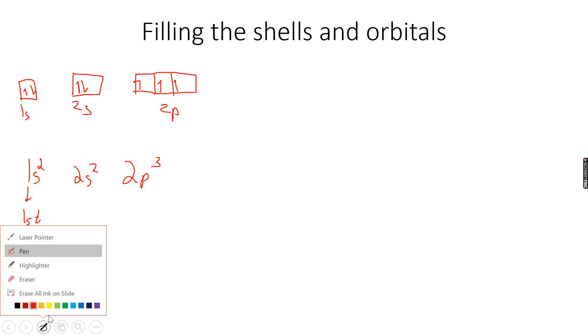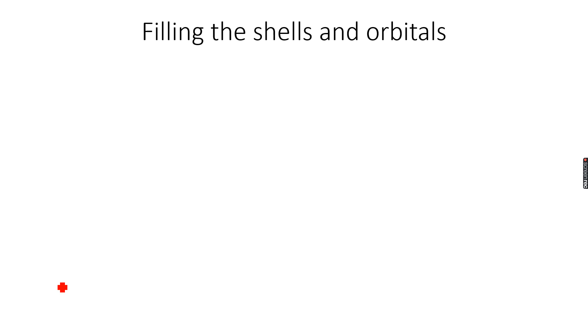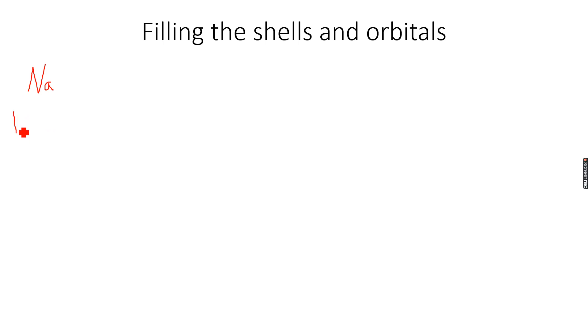Now let's do more examples of electronic configurations. When we look at sodium, sodium has 11 electrons in total. Let's see how we write its configuration.